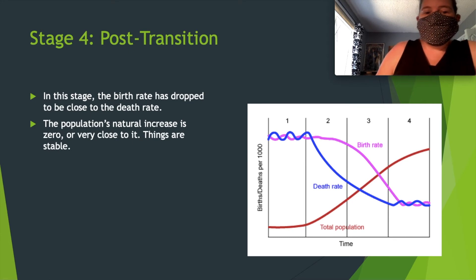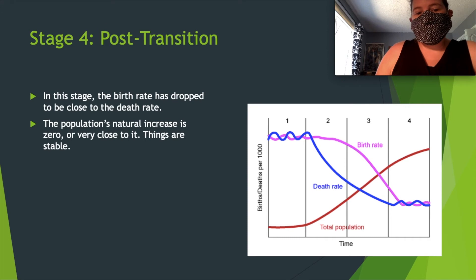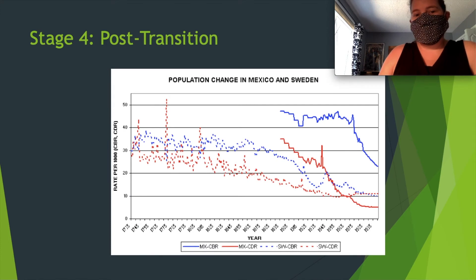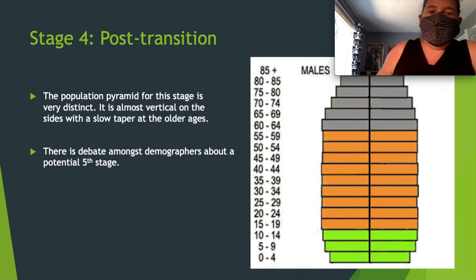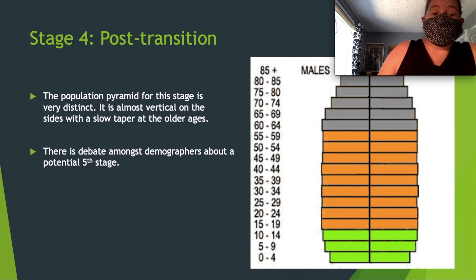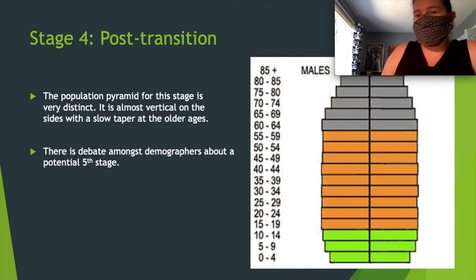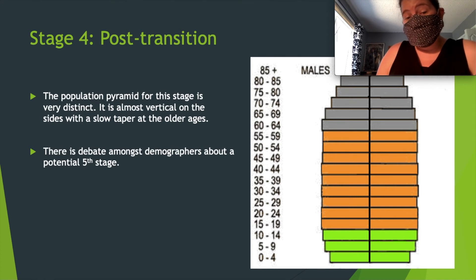Stage four is the post-transition stage. In this stage, the birth rate has dropped to be close to the death rate, the population's natural increase rate is zero or very close to it — this is as stable as we get. The population pyramid at this stage is very distinct: it's almost vertical with a slow taper for the older ages. There is a debate among demographers that there may actually be a fifth stage that we just haven't entered yet.